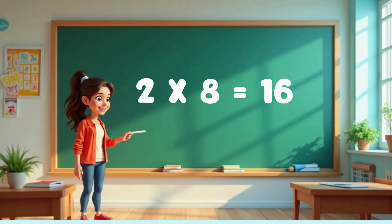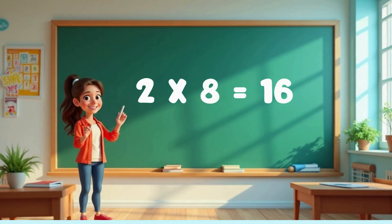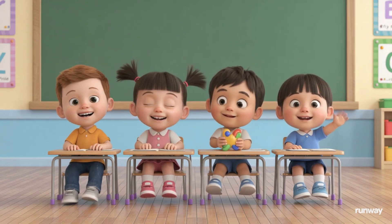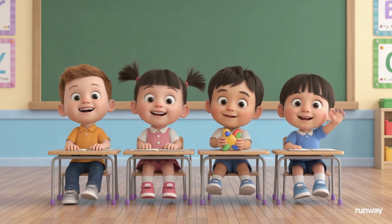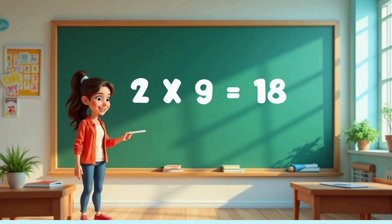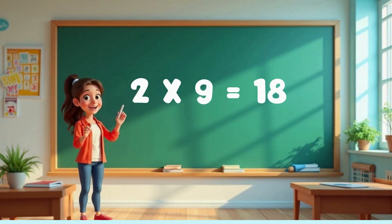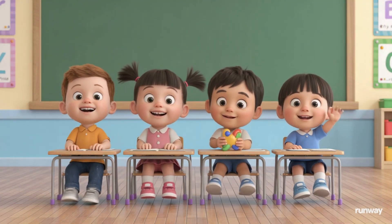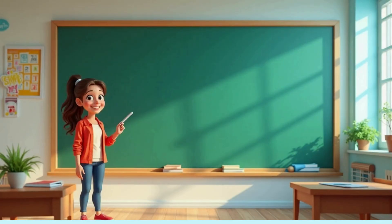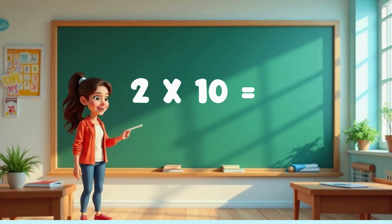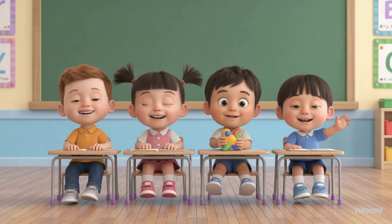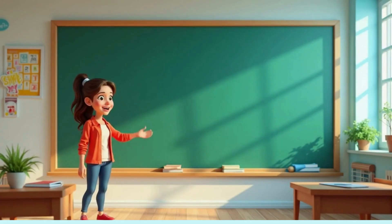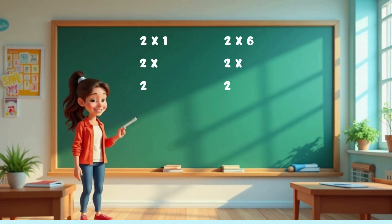Two eights are sixteen. Two eights are sixteen. Two nines are eighteen. Two nines are eighteen. Two tens are twenty. Two tens are twenty. Now you repeat alone.